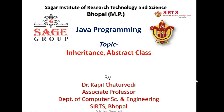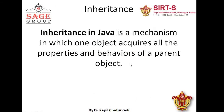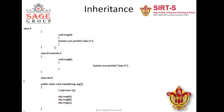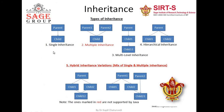In the earlier classes, we discussed the concept of inheritance as well as the concept of abstract class. In case of inheritance, we discussed that inheritance is a process of acquiring the features of base classes. The concept of inheritance has some types like single inheritance, multiple inheritance, multilevel inheritance, and hierarchical inheritance. But in Java, Java does not support multiple inheritance due to its complexity.